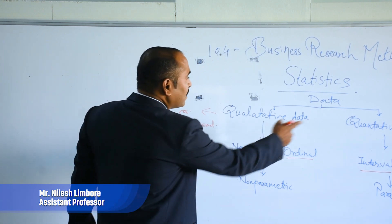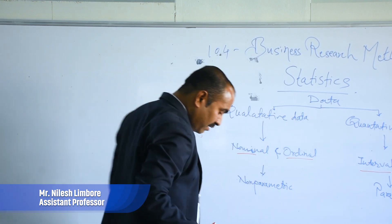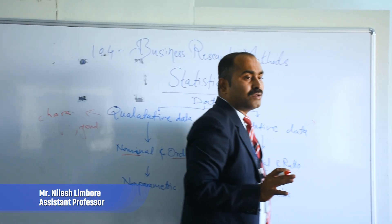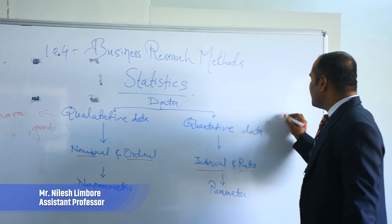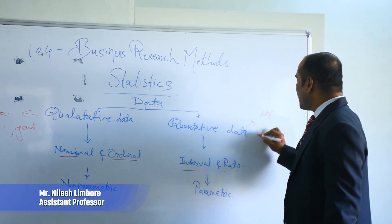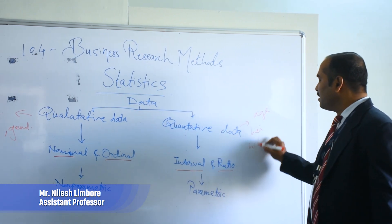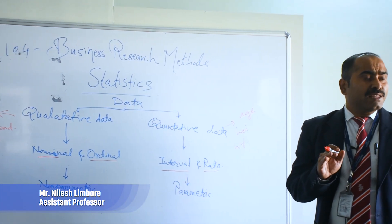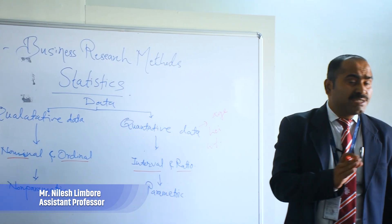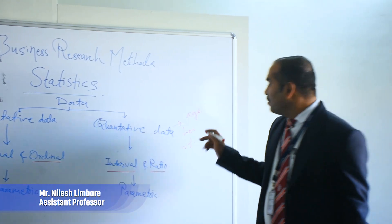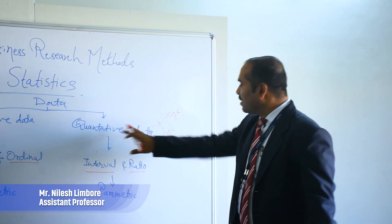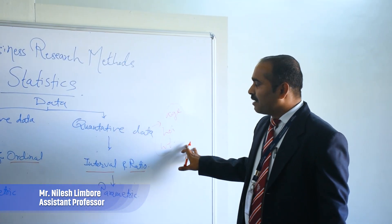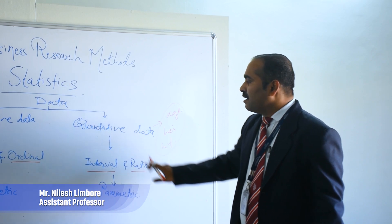The second type is quantitative data. Quantitative data comes in some quantity or numbers. For example, age, height, weight — this data comes in quantity and there is a fixed measure to calculate this data. So this is the quantitative data.